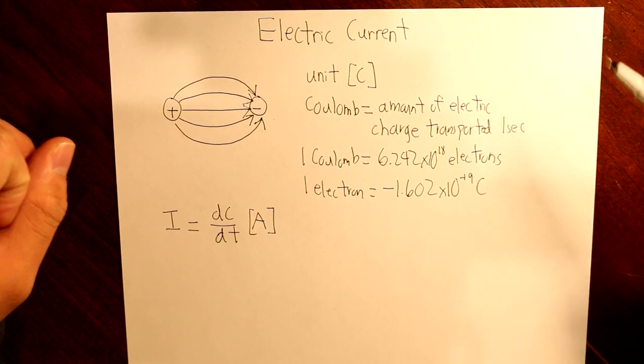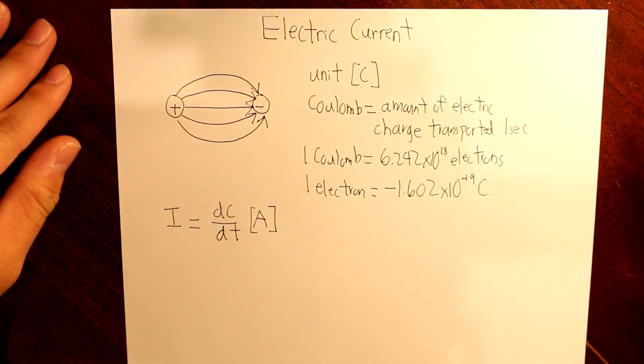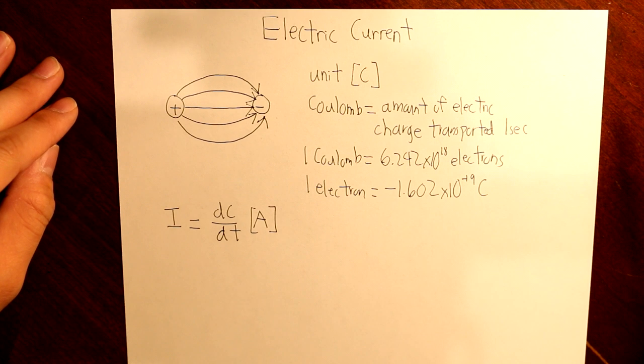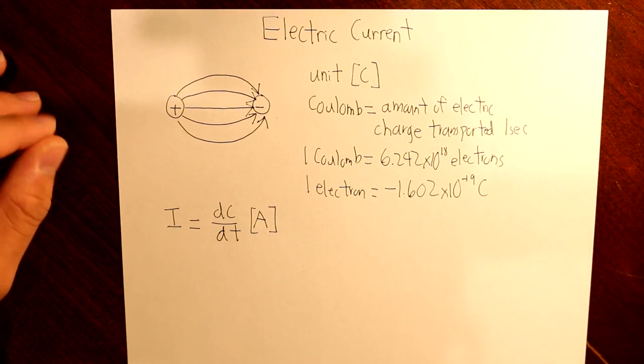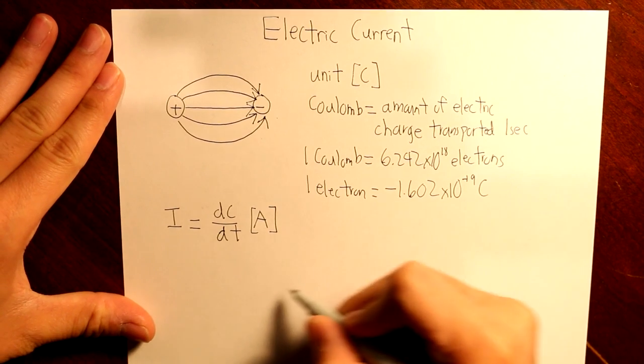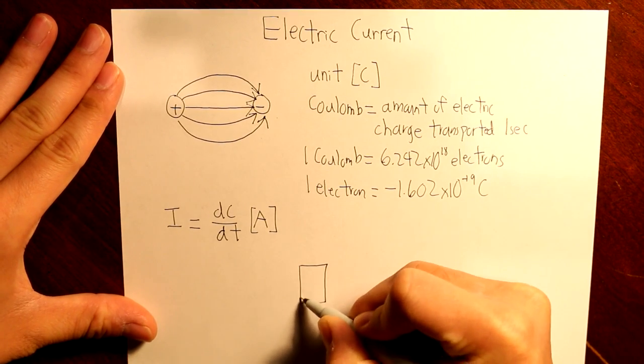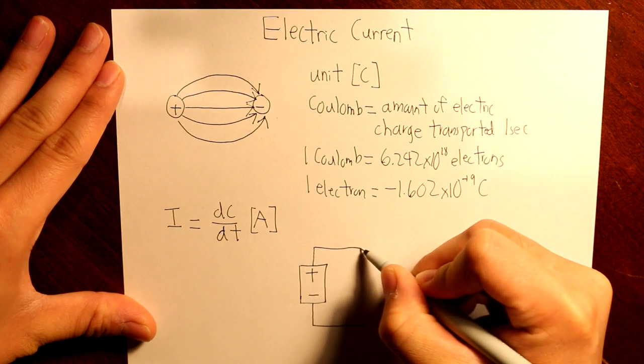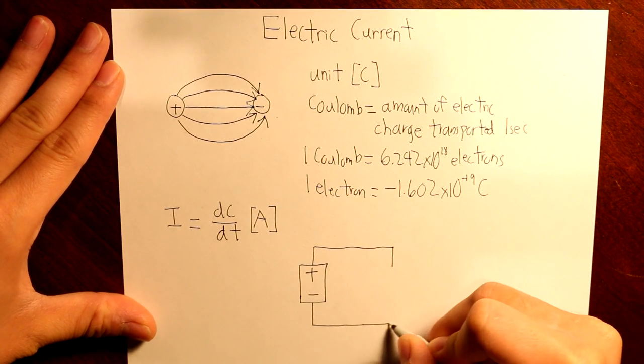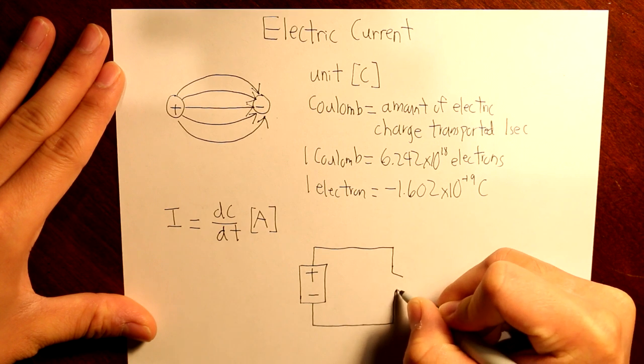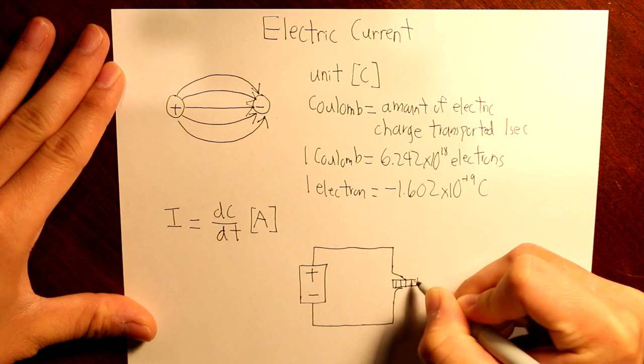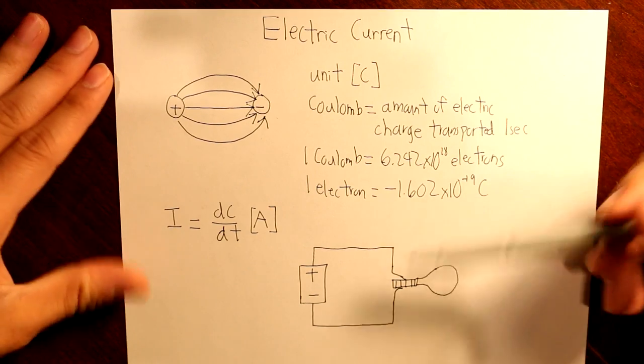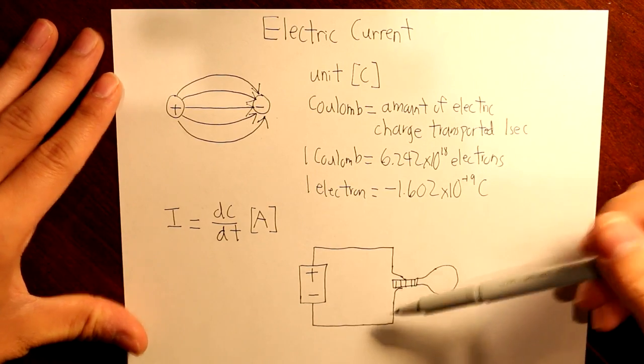So now, since we know the basis of electric current, now let's apply this to an electric circuit. Because as we know, this channel is about electrical engineering. So, let's draw out the simplest circuit with a battery and then two wires coming out from this battery. And across this battery is a light bulb. So here we have the light bulb, and here we have wires.